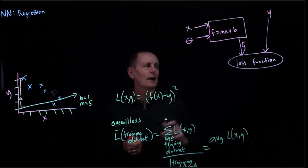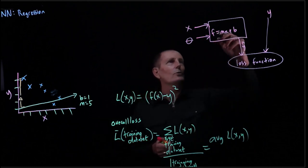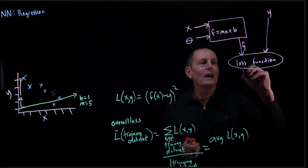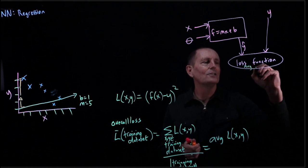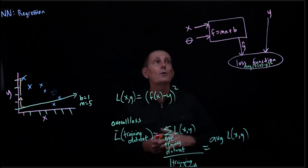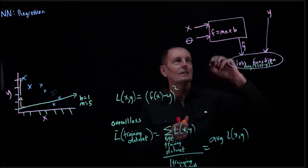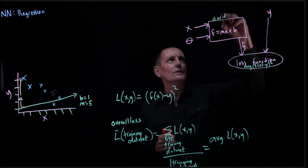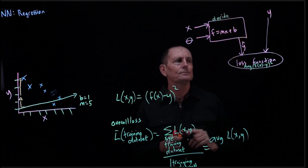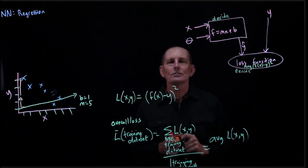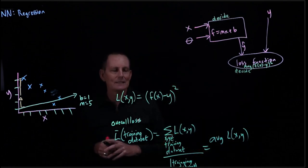So that's how we define our loss function. We have f equals mx + b, and our loss function is the average of (f(x) − y)² over the training set. We are deciding both the form of f and the loss function we want to use.